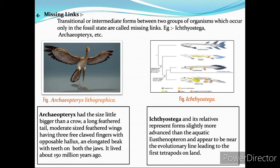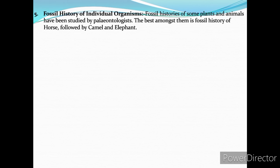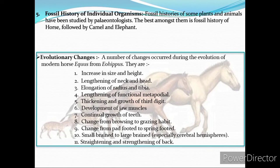Ichthyostega and its relatives represent forms slightly more advanced than the aquatic lobe-finned fish and appear to be near the evolutionary line leading to the first tetrapods on land. Fossil histories of individual organisms — the best studied is the fossil history of the horse, followed by camel and elephants. Evolutionary changes from Eohippus to the modern horse include: change in size and height, lengthening of neck and head, elongation of radius and tibia, thickening and growth of the third digit, development of jaw muscles, continual growth of teeth, change from browsing to grazing habit, change from pad-footed to spring-footed, small brain to large brain with enlarged cerebral hemispheres, and strengthening and straightening of the back.